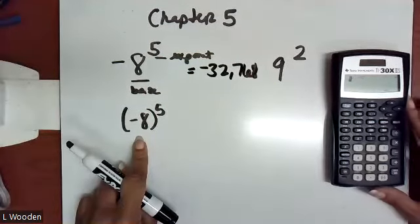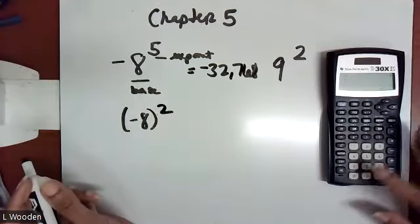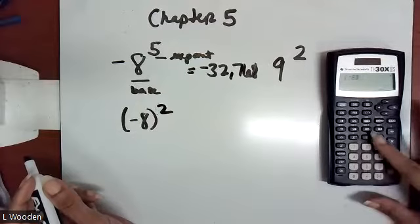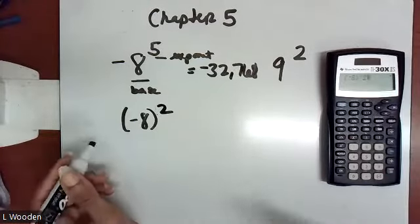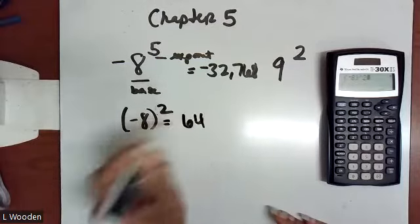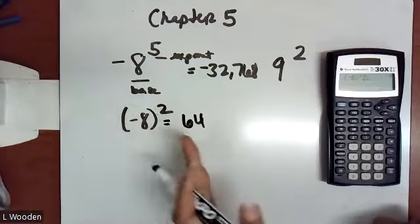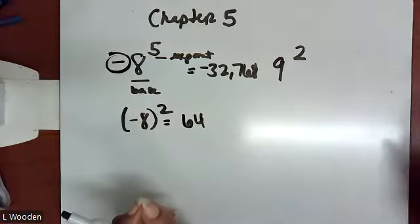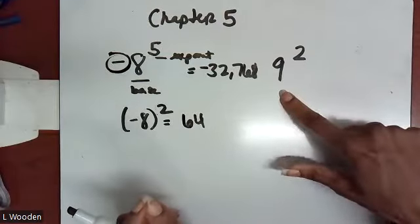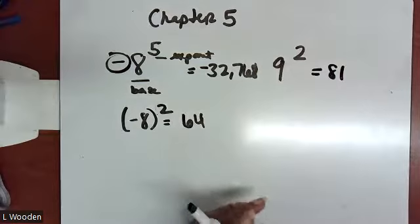If you have parentheses present, recognize that we are raising an actual negative eight to the second power. You're multiplying it to itself twice, which is why it becomes positive. Without parentheses, you're just multiplying eight to itself five times and then the negative applies to the outcome. Here, a base of nine and exponent of two gives us 81. Make sure you understand how to identify a base and an exponent.